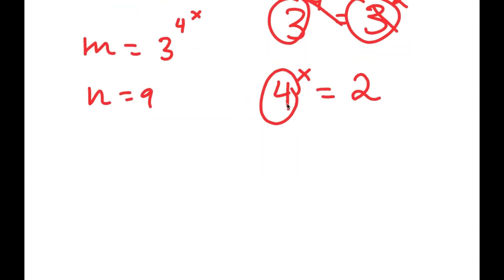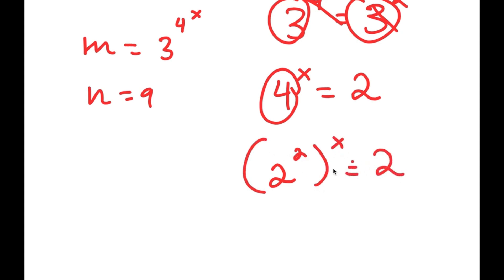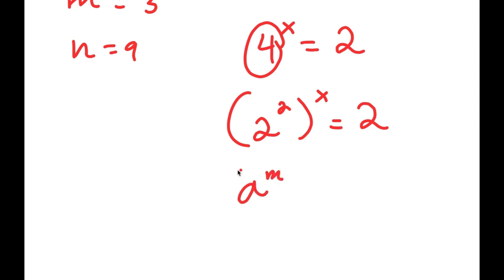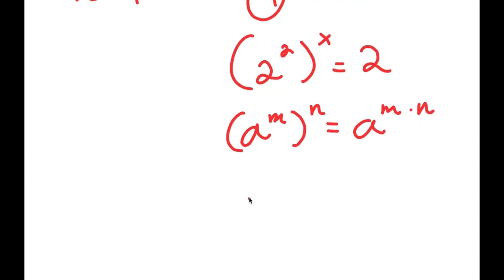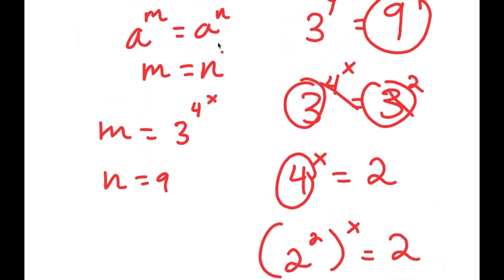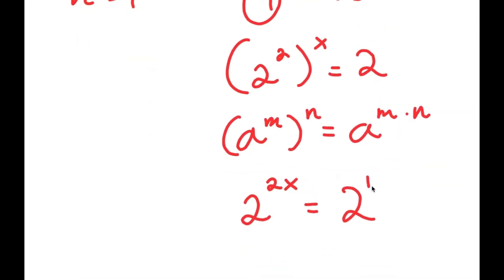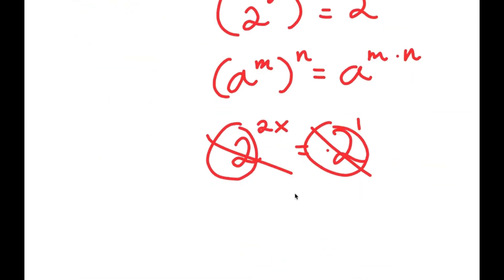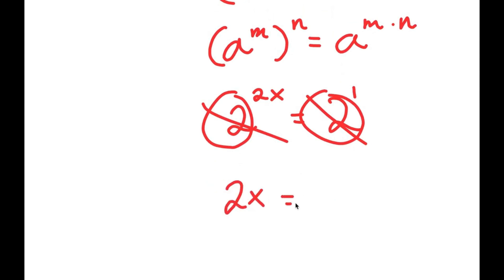Again, I can use this property because both bases are the same, so 4 to the power of x is equal to 2. Now, 4 is the same thing as 2 squared, so I get 2 squared to the power of x is equal to 2. And if I have something in the form a to the power of m to the power of n, this equals a to the power of m times n. So 2 to the power of 2 to the power of x equals 2 to the power of 2x. This equals 2, and since 2 is the same as 2 to the power of 1, and the bases are the same, I get 2x is equal to 1.